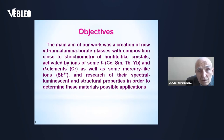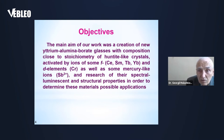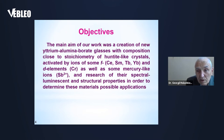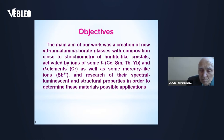Objectives: The main aim of our work was the creation of new yttrium-alumina-borate glasses with composition close to stoichiometry of huntite-like crystals, activated by ions of some f-elements — cerium, samarium, terbium, ytterbium — and d-elements — chromium — as well as some mercury-like ions. And research of their spectral, luminescence, and structural properties in order to determine possible applications of these materials.